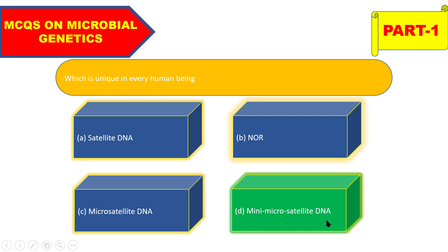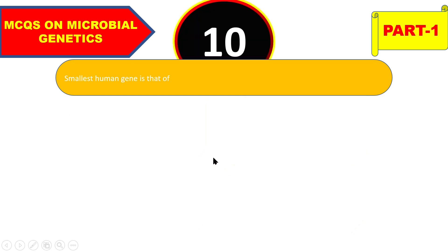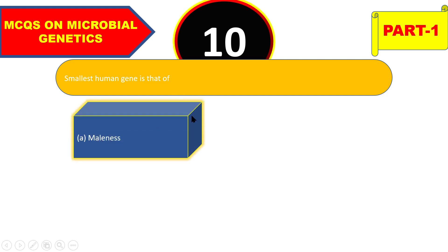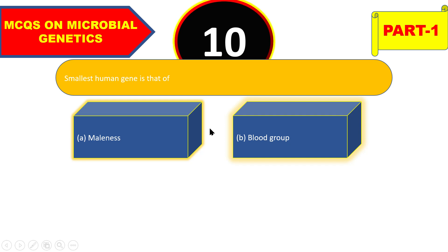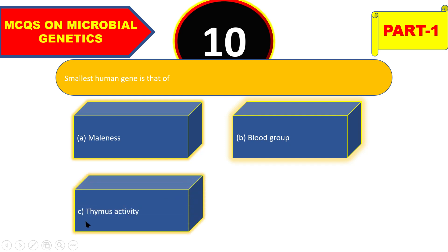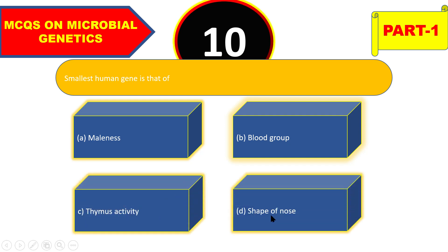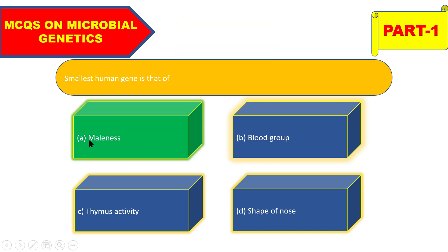The next question: the smallest human gene is that of malignant, blood group, thymus activity, or shape of nose? The right answer is malignant. The human gene for malignant is the smallest of all.